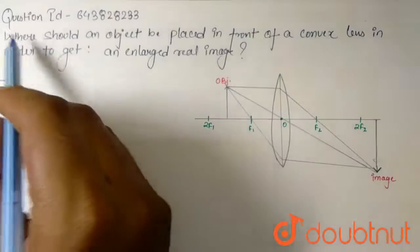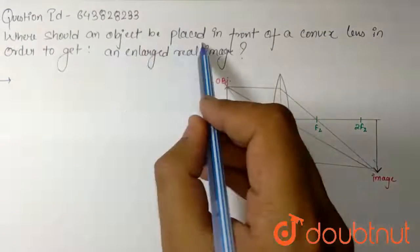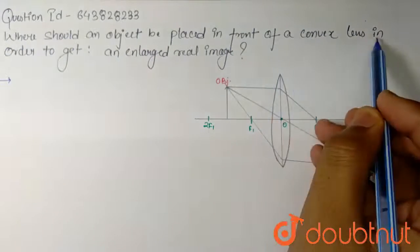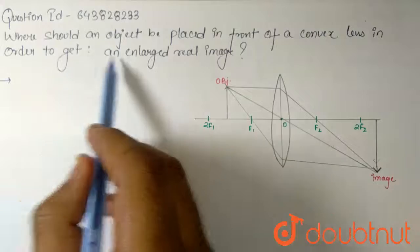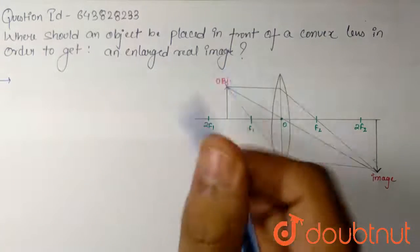Here the question is: where should an object be placed in front of a convex lens in order to get an enlarged real image?